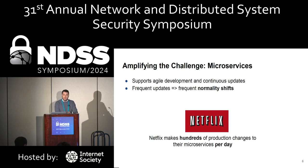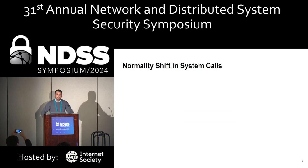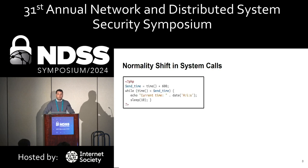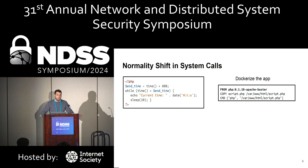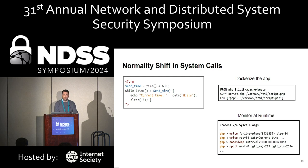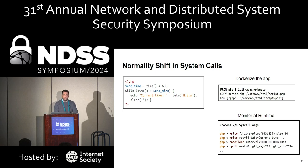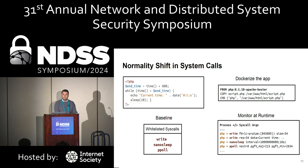Let's look at an example of how an incremental change can lead to a normality shift, using system calls, the most widely used telemetry in anomaly-based intrusion detection. Imagine we have an application which prints the current time every 10 seconds for 10 minutes. We dockerize it and use PHP Apache Buster as a base OS image. At runtime, we get a specific set of system calls, and we build our baseline from the syscalls that represent normal behavior — our whitelisted system calls.